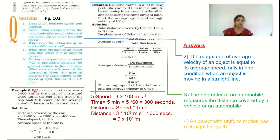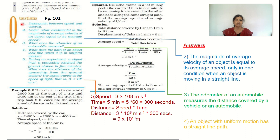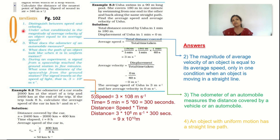This is page number 102. Along with numericals, some solved examples are given. The first question: distinguish between speed and velocity. Speed is a scalar quantity and velocity is a vector quantity — one needs direction and one does not. I am sure you will be able to write the answer. The next question: under what conditions is the magnitude of average velocity equal to average speed?